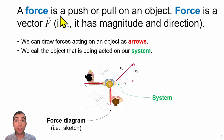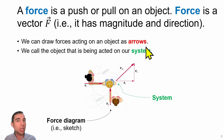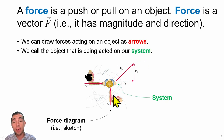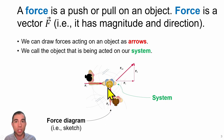A force is a push or pull on an object. Force is a vector, so we can draw it as an arrow just like we did with velocity, acceleration, and position. We call the object being acted on by a force our system, and anything acting on our system will be an agent.